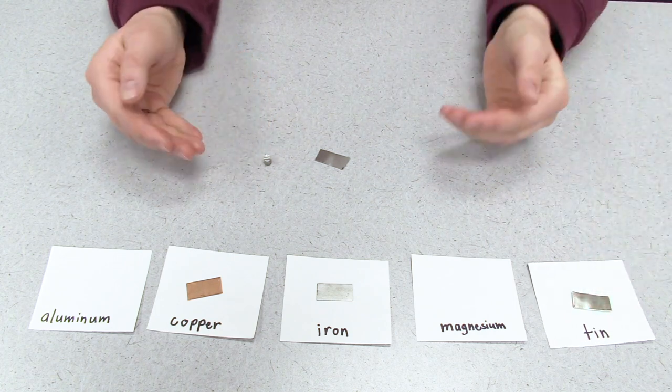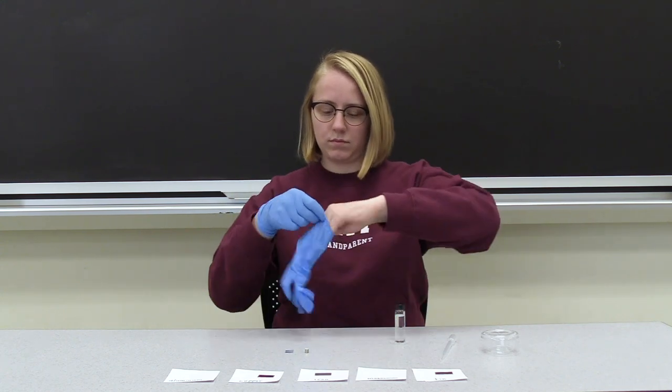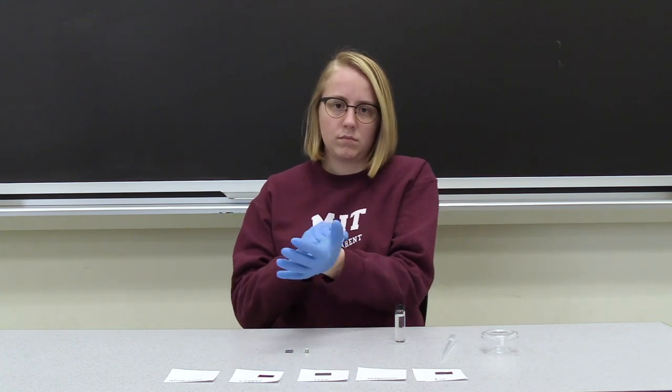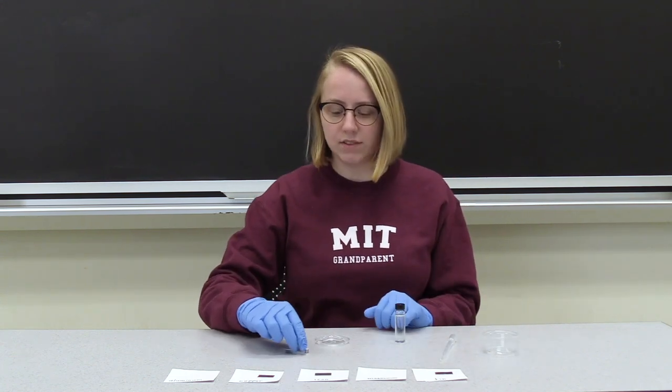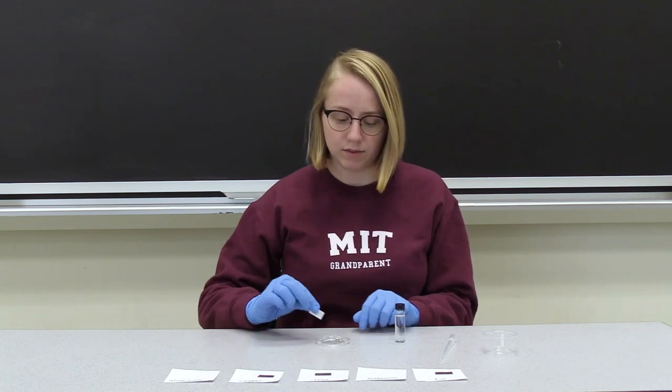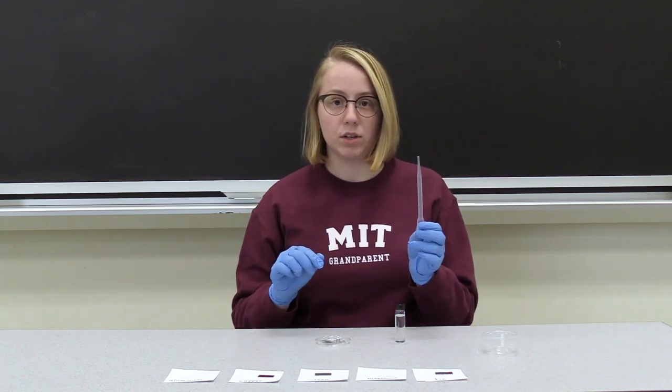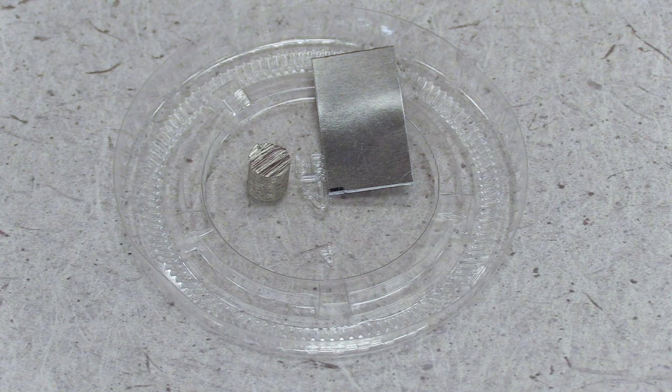To identify which of these samples is magnesium and which of them is aluminum, we're going to test which one of them reacts with vinegar. We're going to place each of these samples on the lid of our plastic cup to make sure we don't spill any of the vinegar, and use our pipette to put a drop of vinegar on each of the samples. And the one that reacts will be magnesium, because we know magnesium reacts with vinegar.